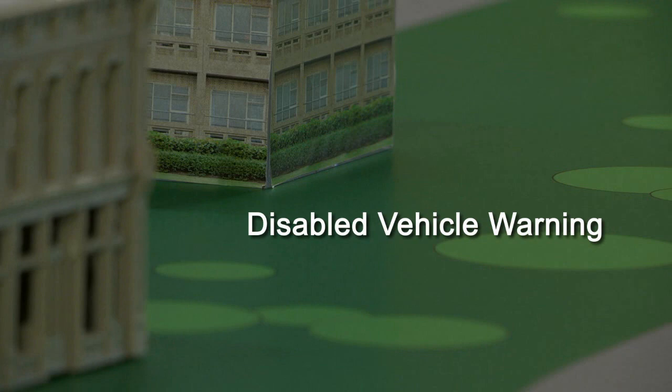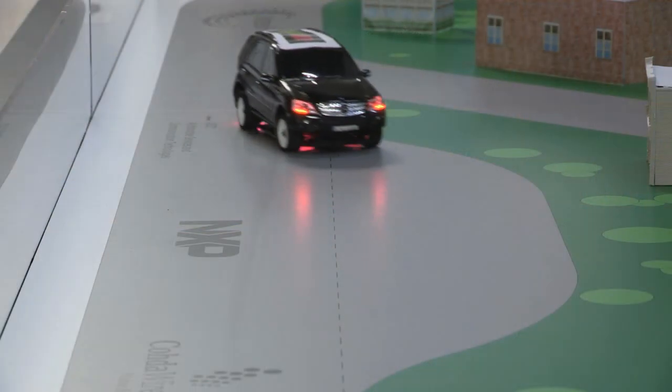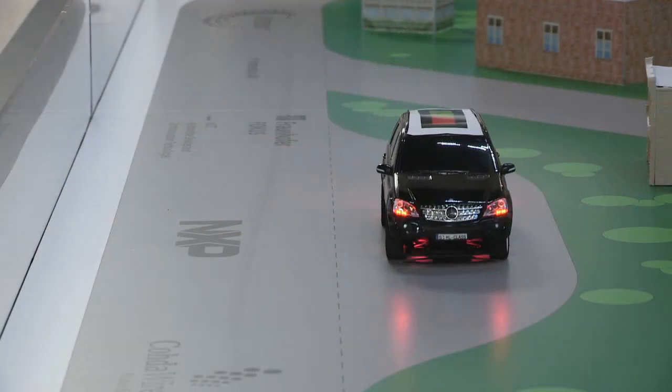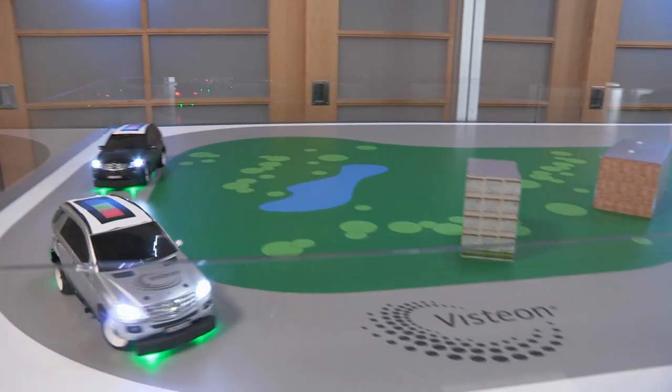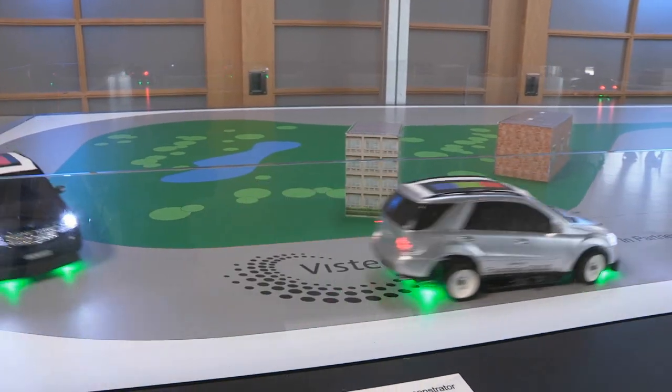This use case shows a V2V or vehicle-to-vehicle example, the disabled vehicle hazard light warning. As you'll see here, the black car ahead of us is having trouble and has its hazard lights on. In some cases, it may be difficult for the driver to know there is a disabled vehicle ahead if their view is obstructed.